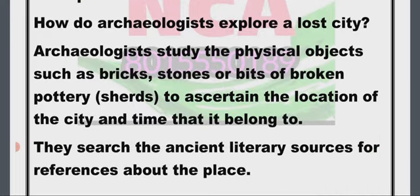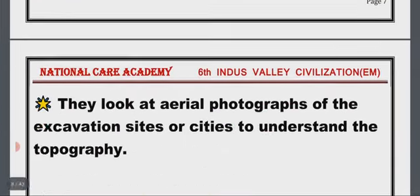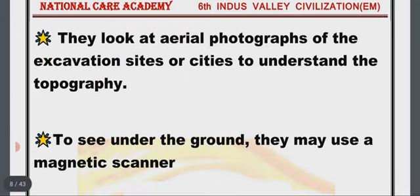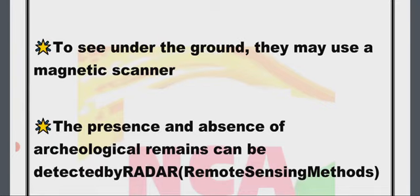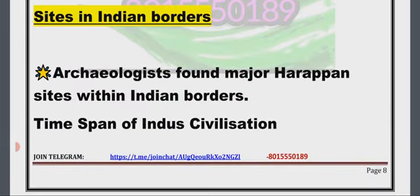How do archaeologists explore a lost city? Archaeologists study physical objects such as bricks, stones, or bits of broken pottery known as shards to ascertain the location of the city and the time it belonged to. They search ancient literary sources for references about the place, look at aerial photographs of excavation sites to understand the topography, and may use a magnetic scanner. The presence and absence of archaeological remains can be detected by radar, known as remote sensing methods.